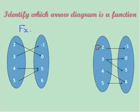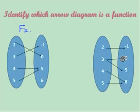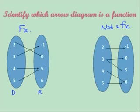Notice the difference with this mapping diagram. We have 2 paired with negative 1, we have 3 paired with 0, and 3 is also paired with 5. So we have a domain value with 2 range values — an x value being repeated. If you see 2 arrows from the same x value or domain value, then it's not a function. These are the domain values and these are the range values, or the x values and the y values.